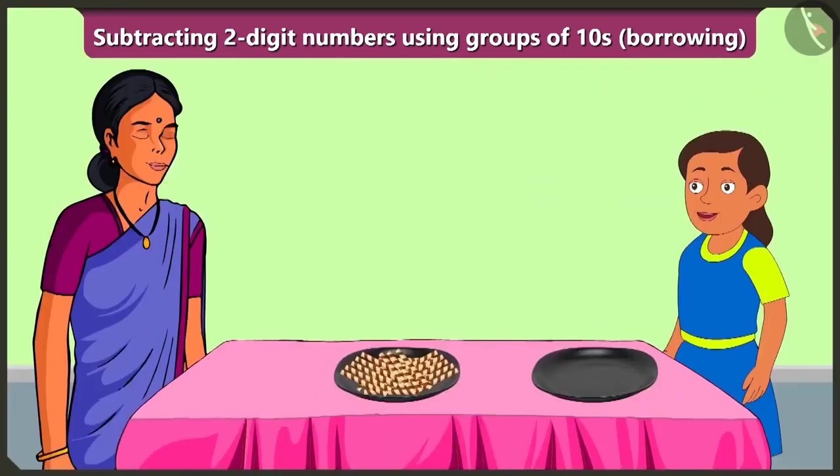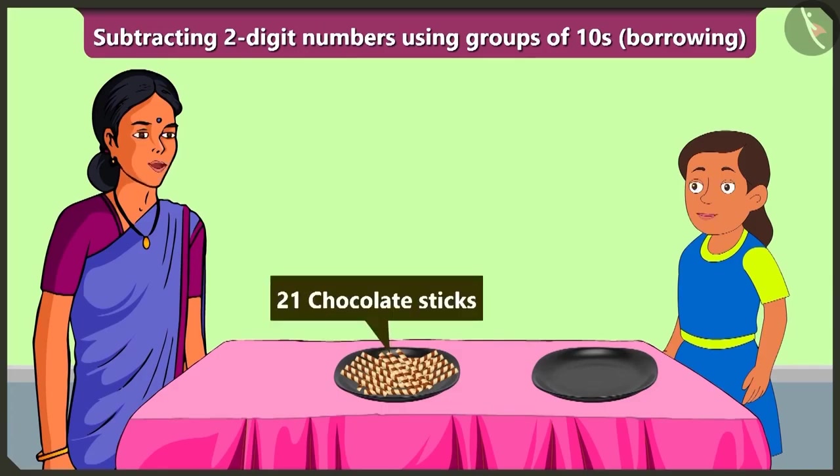Oh wow, chocolate sticks, I will take twelve sticks. Bubbly, there are a total of twenty-one chocolate sticks. If you will take twelve sticks from a total of twenty-one sticks, then how many sticks would Bunty get?